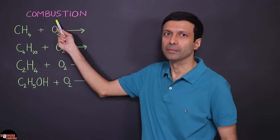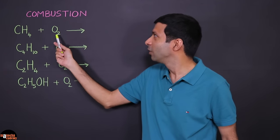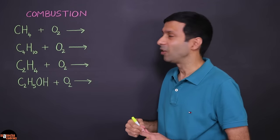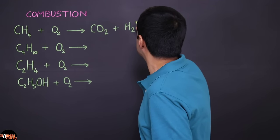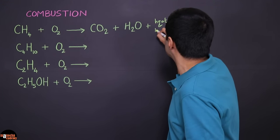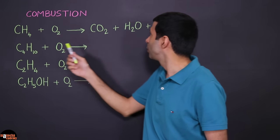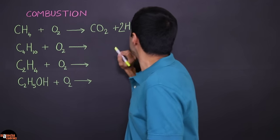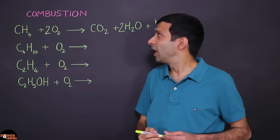Let's start with our first reaction: combustion. What does combustion mean? It's simple — it means to burn. These compounds burn in air, so they react with the oxygen in the air. Let's start with methane. When it burns in air it will produce carbon dioxide and water vapor, and also heat and light energy. The carbon in the hydrocarbon produces carbon dioxide and the hydrogen produces water vapor. Don't forget to balance the reaction.